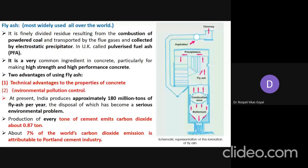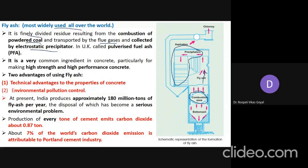Fly ash is the most widely used admixture all over the world. It is a finely divided residue resulting from the combustion of powdered coal. In the combustion zone, when powdered coal is burned, fly ash is generated and moves along with the flue gases. It is then collected in an electrostatic precipitator, which is an air pollution control device. In the UK it is also called pulverized fuel ash. It is widely used in India particularly for making high-strength and high-performance concrete.